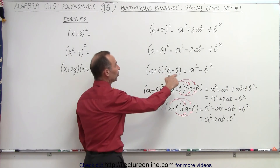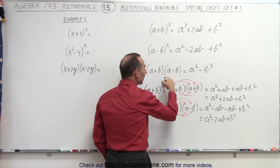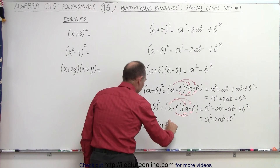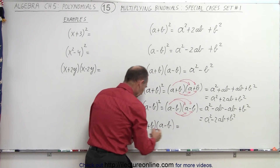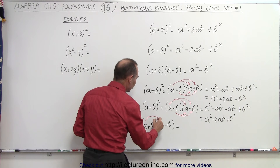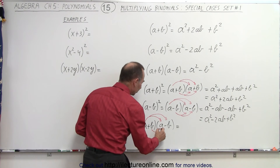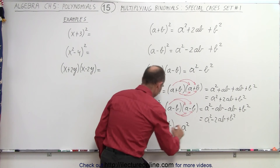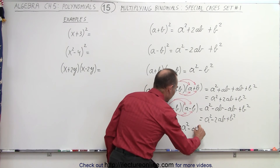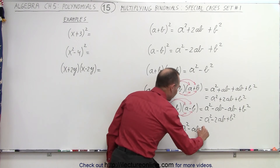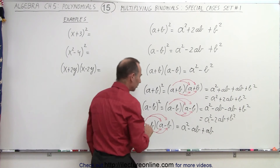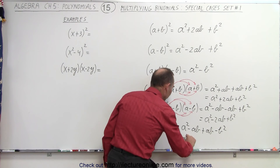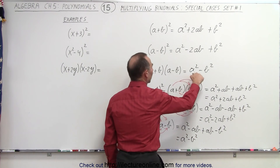Finally, what happens when we multiply a plus b times a minus b? When you have a plus and a minus, the middle term simply drops out. Multiplying out: a times a is a squared, a times negative b is minus ab, b times positive a is plus ab — and you can see the middle term cancels out. And b times negative b is minus b squared. So those two middle terms drop out and we end up with a squared minus b squared, just as stated.